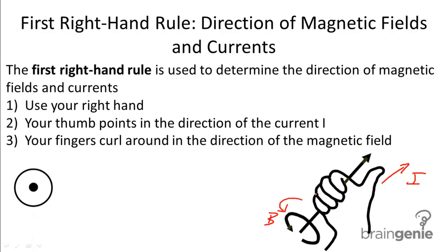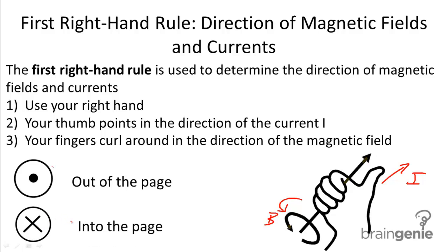Here are two conventions that we need to use. This convention is used to symbolize a current or a magnetic field out of the page. And this is used to symbolize a current into the page.